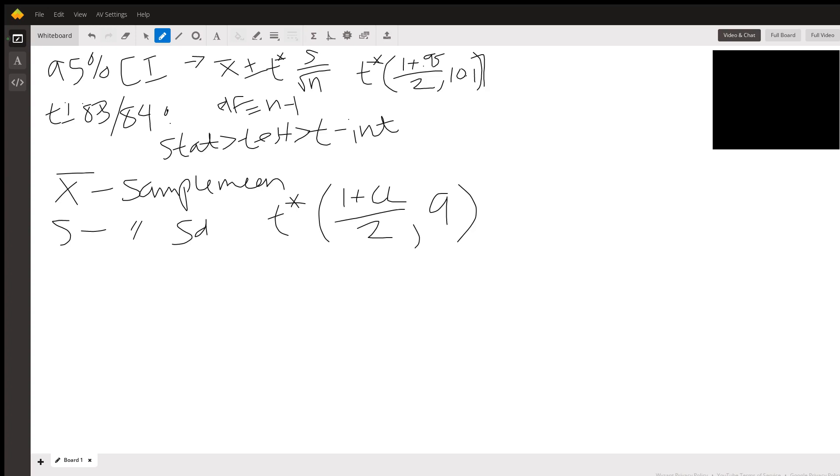From there, what you're going to do is your mean minus whatever value you get from the table. So we call that t star or t crit, the critical value - lots of different names for that.